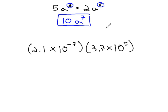We are going to follow a similar pattern on the scientific notation. Below, you see the problem we're really interested in: 2.1 × 10⁻⁷ times 3.7 × 10⁵.